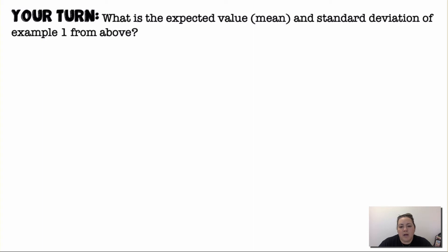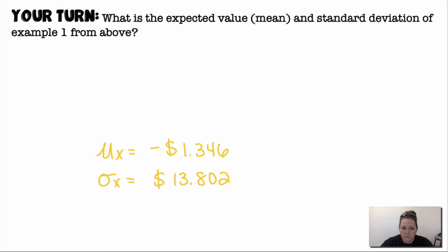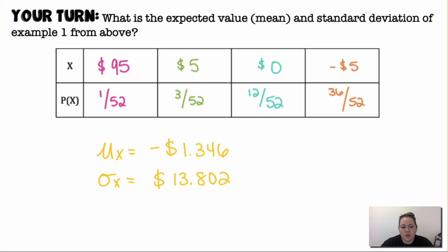Now it's your turn — find the expected value or mean and standard deviation of problem number 1. Pause and see if you can figure it out with your calculator. You should have gotten approximately negative $1.35 and a standard deviation of approximately $13.80.